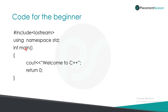Next comes our main function with the int return type. Main functions can be of int return types or of void types. Void types are now obsolete, so most of the main functions are with int return type. Inside the main function we have a statement to print welcome to C++. The keyword used for printing is cout, which is given in the namespace std and in the file iostream.